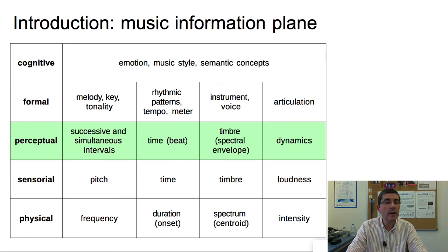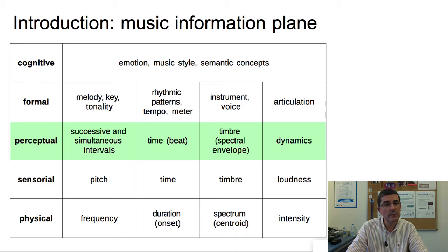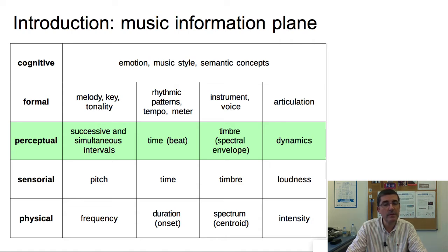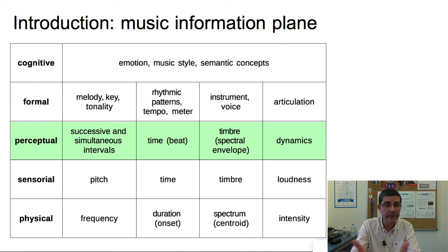We can go a level higher and talk about perceptual concepts that are more musical, related to musical concepts. Here we talk about successive and simultaneous intervals of pitches — what will be called notes. When we talk about time, we talk about the structuring of time and things like the beat. For timbre, we talk about aspects we can identify and characterize with some aspect of a musical sound; for example, the spectral envelope. And instead of loudness, when we talk about musical loudness, we normally refer to dynamics, and we have vocabulary that talks about the dynamics of musical sounds.